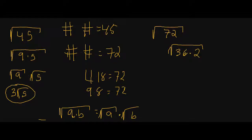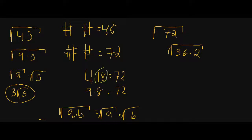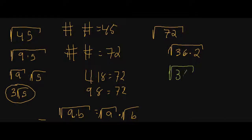I prefer 36 times 2 over all the others because 2 is a small number — I can't reduce 2 any further. I can reduce the 18 further and I can reduce the 8 further, but I can't reduce the 2 any further. That's why I wanted that one. So now we break it up using our conjecture: the square root of 36 times the square root of 2. Well, the square root of 36 is just 6, so our answer is 6 times the square root of 2.